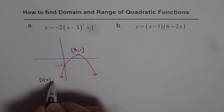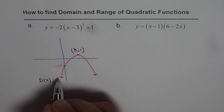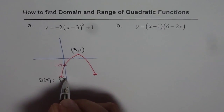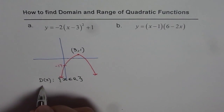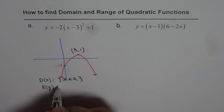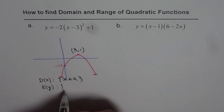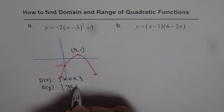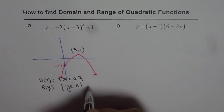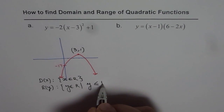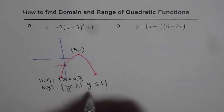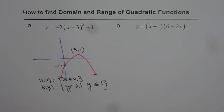From the sketch, we can write the domain and range for this quadratic function. The domain is the set of all real numbers — x belongs to real numbers. The range is restricted because the parabola opens downwards, so the y value is less than or equal to 1.